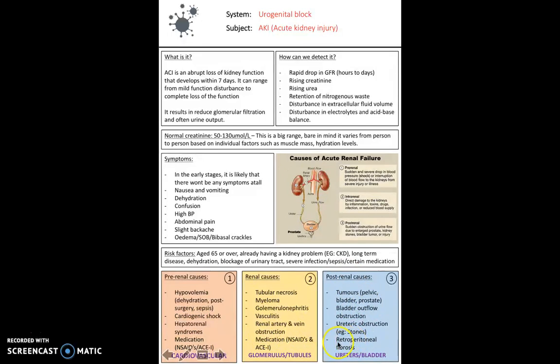Post-renal causes can be related to the ureter or bladder due to location. It could be a tumor (pelvic bladder tumor or prostate problem), a bladder outflow obstruction (for example, urinary tract stones), or retroperitoneal fibrosis.